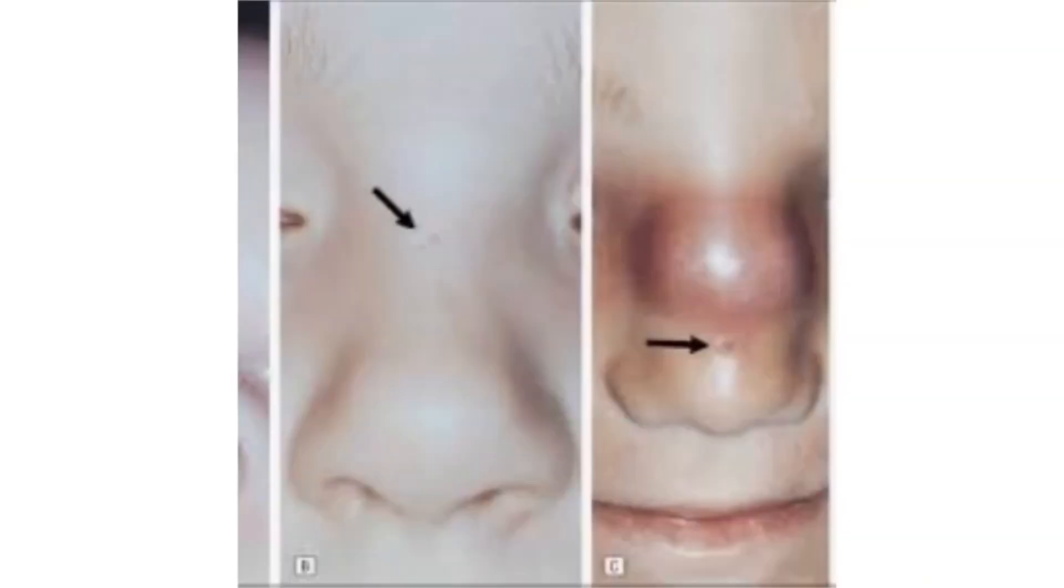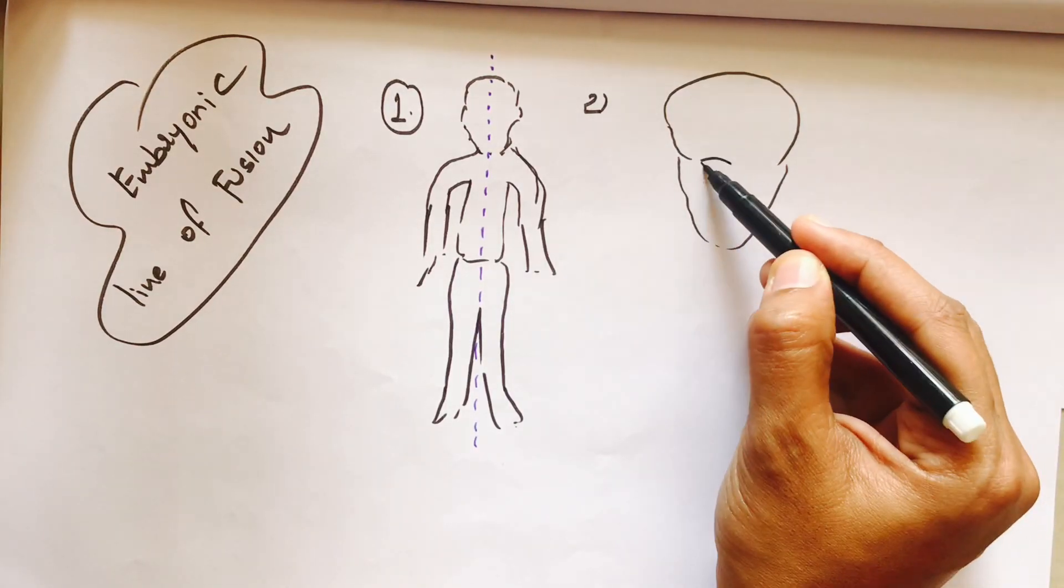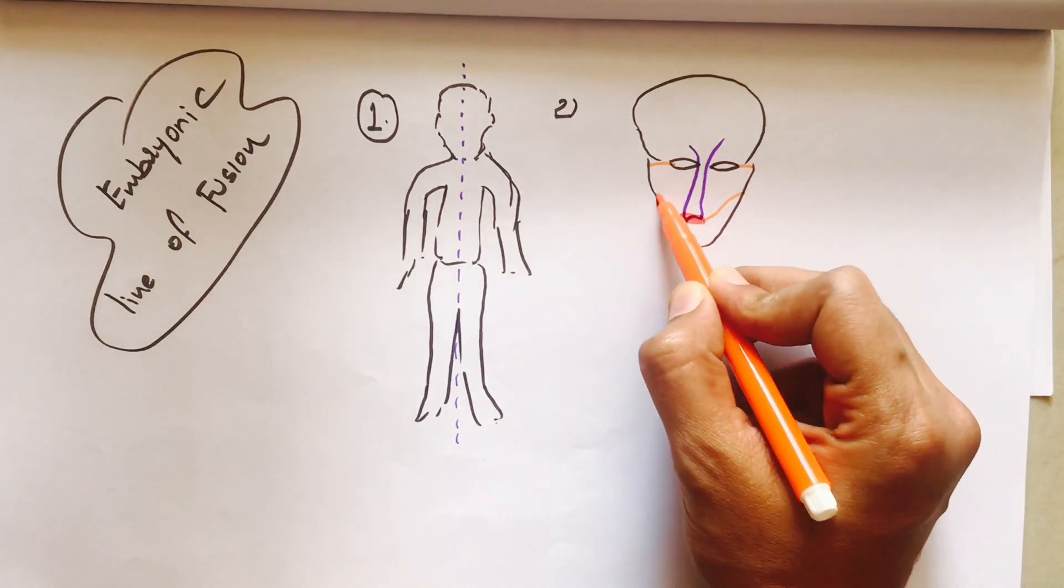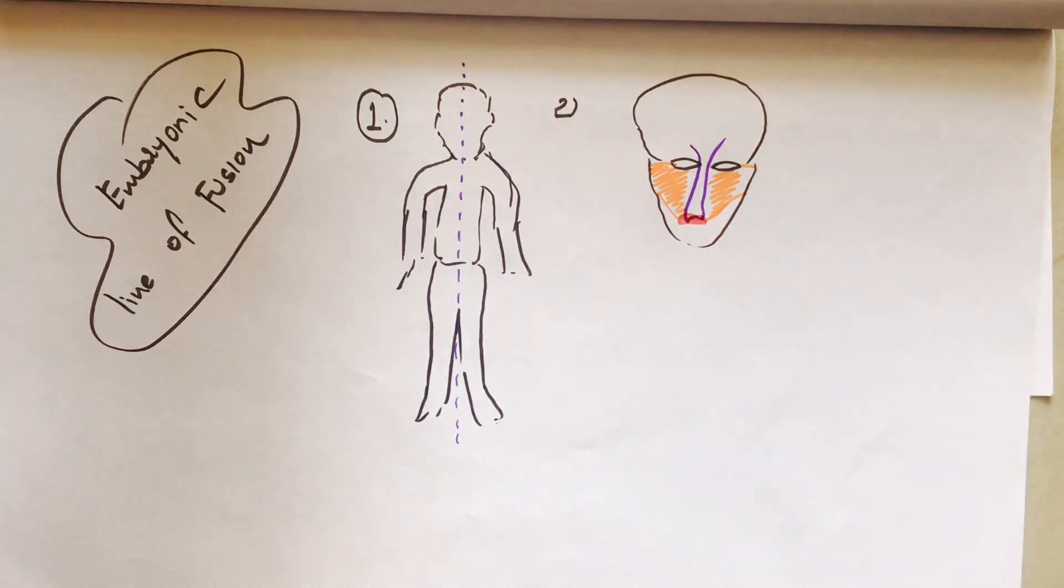Number two: in the face, it occurs mostly at the outer canthus of the eye and the root of the nose. What is the embryonic line of fusion at this area? For this, we should know about the development of the face.